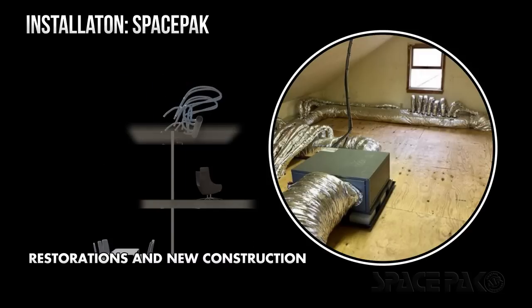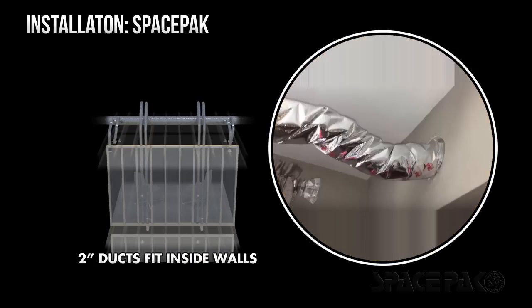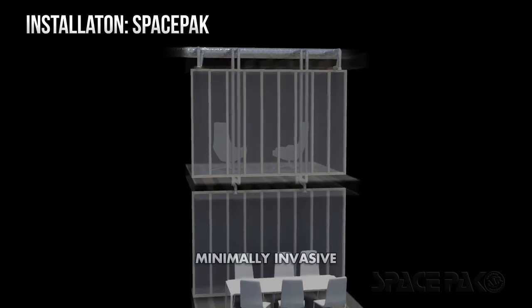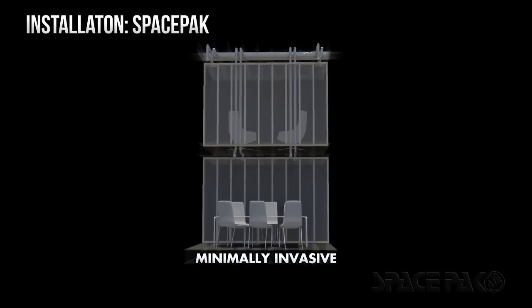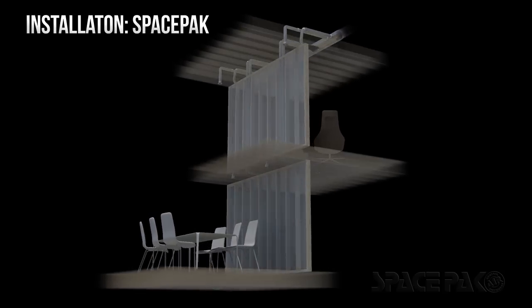SpacePak ductwork is easy to install. The ducts used in a SpacePak system are small and flexible. Branching out from the plenum, they are slid through your existing walls, and the only construction required is where the duct enters and exits the wall. SpacePak ducts are minimally invasive and can be threaded through your existing frame.